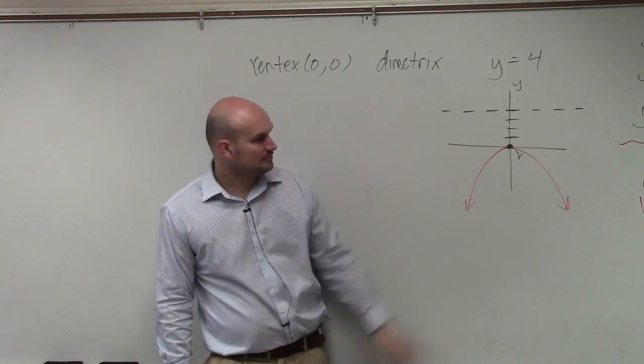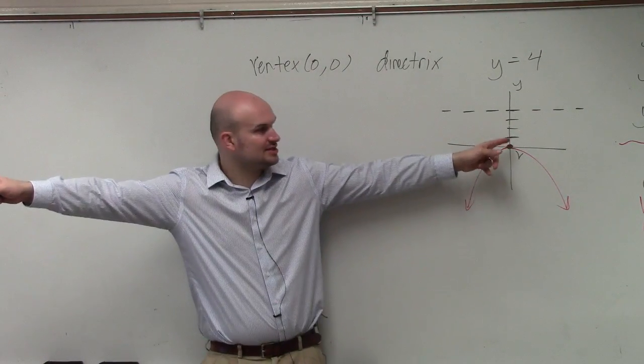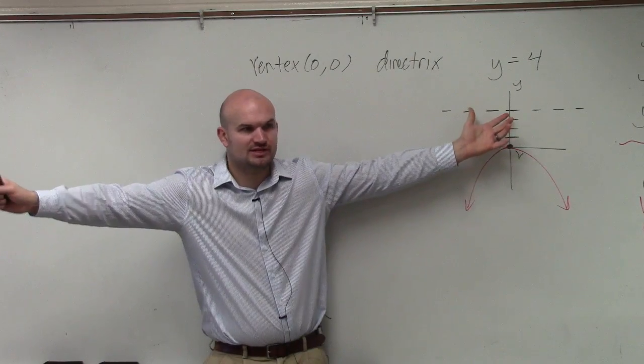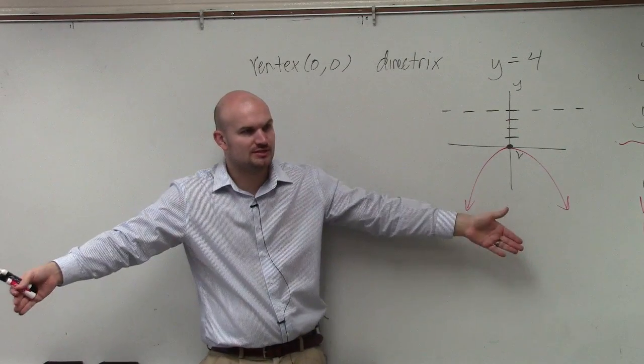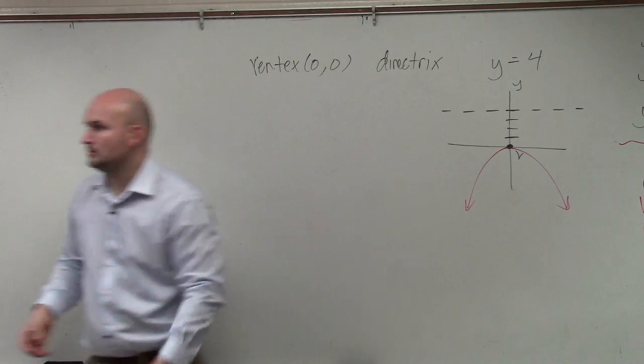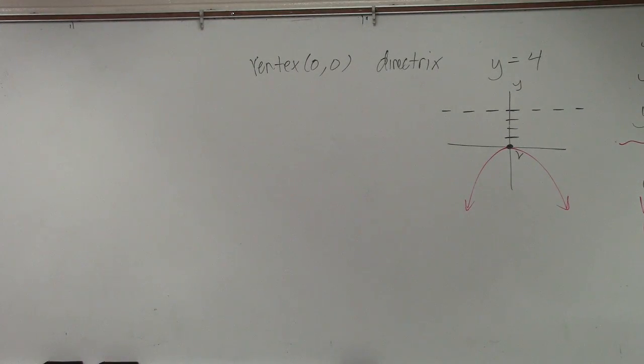How do you know it was going down? Because you can see, the parabola doesn't open up towards the directrix. It opens away from the directrix. You can see here's the directrix, here's the vertex.